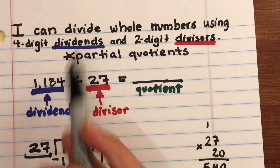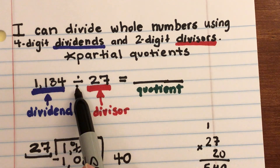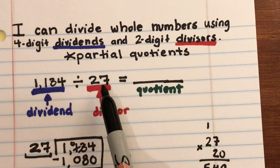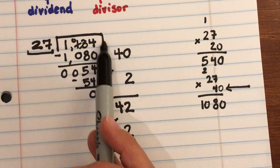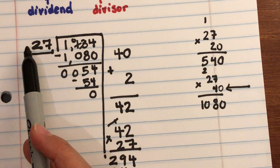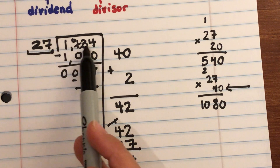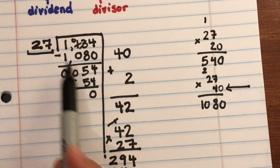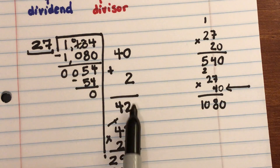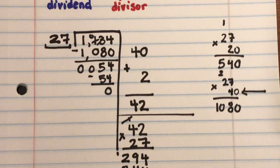To recap: when dividing whole numbers with 4-digit dividends and 2-digit divisors — the 5th grade standard — using partial quotients, remember the first number is the dividend, the second is the divisor, and the answer is the quotient. Set up with the dividend inside and the divisor outside. Here, 27 goes into 1,134 40 times to start; subtract, continue, and it goes in 2 more times. Add the partial quotients and double-check your work to arrive at 42.